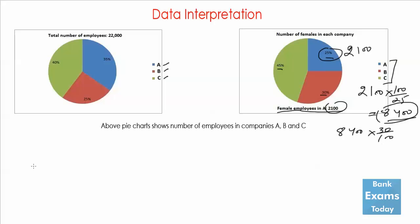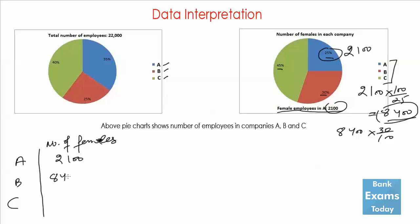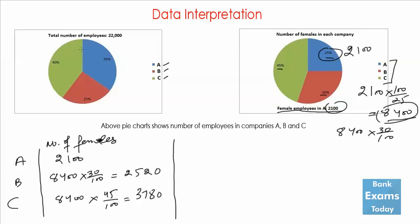We can make a table here for companies A, B, and C showing the number of females. In company A there are 2100 females. In company B it is 8400 × 30/100, which becomes 2520. In company C it is 45% of 8400, which is 3780.